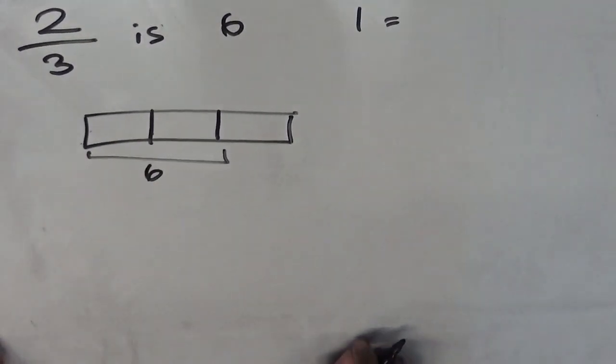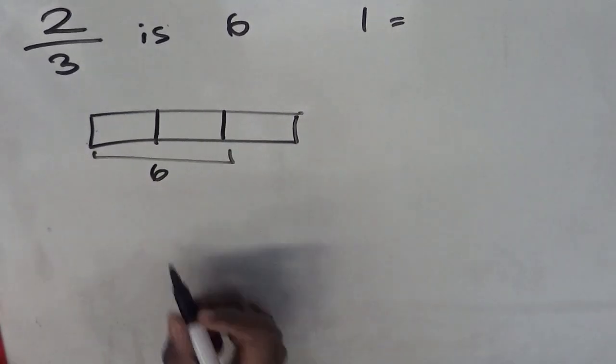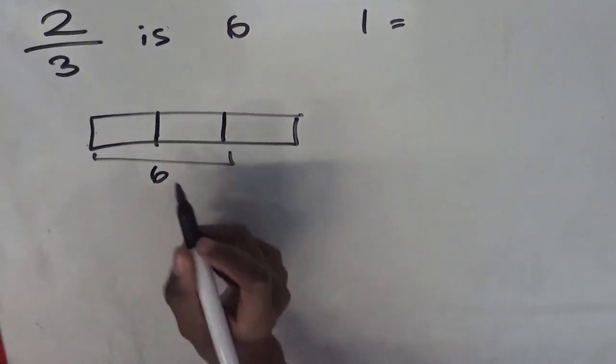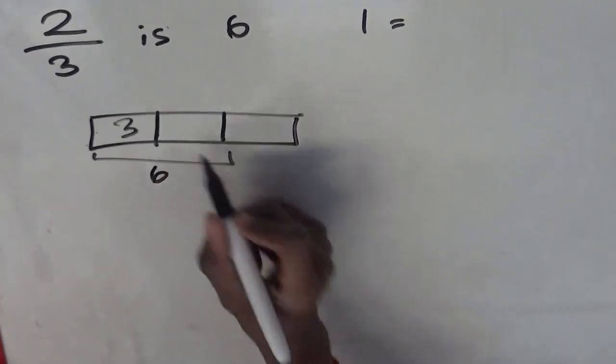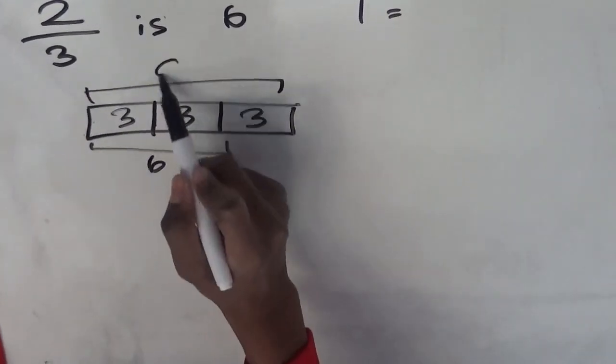we can then find out that if 6 is 2 blocks, then that must mean that 1 must be 3. So if each one is 3, that will give us a whole block total of 9.